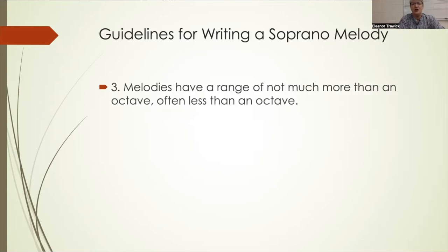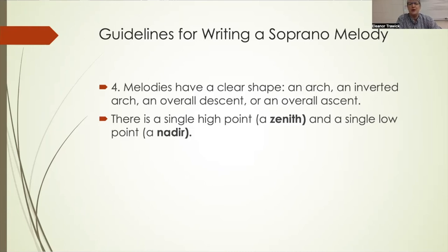Melodies are going to have a range of not much more than an octave and often considerably less than an octave. Melodies are going to have a clear shape — they will be an arch that goes up and then down, or an inverted arch that goes down and then up, or they'll have an overall descent or an overall ascent. Even when we have an overall descent, we'll sometimes move the line up only to continue going down. In our melodic line, there is a single high point called the zenith of the line, and a single low point called the nadir of the line.